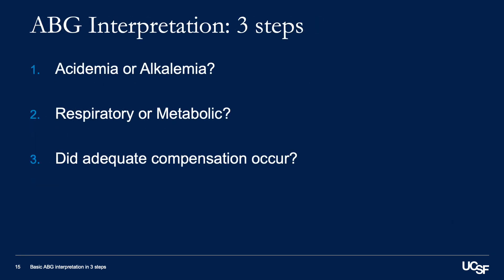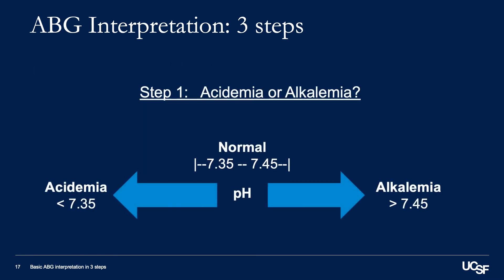Now let's look into the steps required to interpret an ABG. We'll start by using the pH to determine whether the blood is acidemic or alkalemic, then use the carbon dioxide and bicarbonate levels to determine whether the primary issue is respiratory or metabolic, and use some calculations to determine whether the body responded appropriately. Our first step is the most simple: if the pH is below 7.35, you have an acidemia; if it's greater than 7.45, you have an alkalemia.